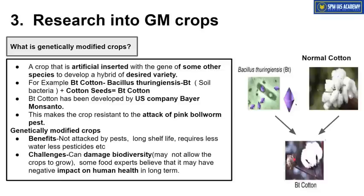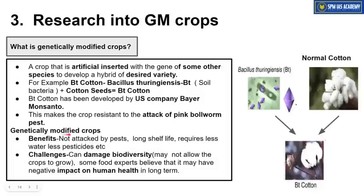So a GM crop is artificially inserted with genes of some other species to develop a hybrid of a desired variety. Why is genetic modification done? For example, BT cotton was created by mixing Bacillus thuringiensis bacteria genes with normal cotton to bring desired improvements. In BT cotton, the shelf life increases — it doesn't spoil quickly — and it can be protected from pest attacks. Normal cotton can easily be destroyed by the pink bollworm pest, but BT cotton cannot. These BT cotton seeds were developed by US company Bayer Monsanto.